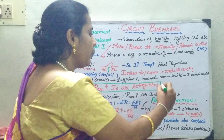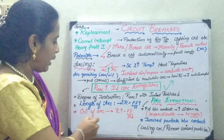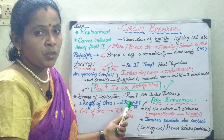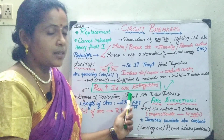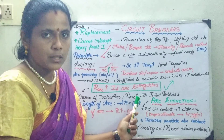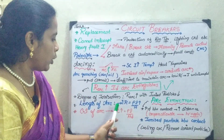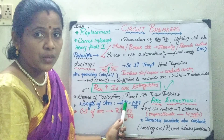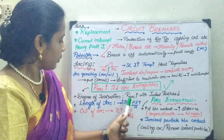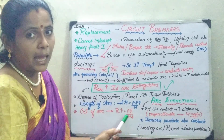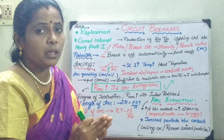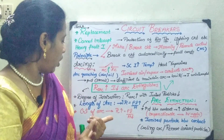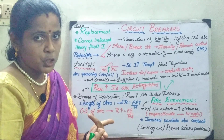Now we will see the factors that contribute to increasing the arc resistance. The first is the degree of ionization — whenever the ionized particles decrease, we can increase the resistance of the arc and thereby quench the arc as soon as possible. The second factor is the length of the arc. Using the general formula R = ρL/A, if we want to increase the arc resistance, that is facilitated by increasing the length of the arc. The third factor is by reducing the cross-section of the arc, we can increase the arc resistance.